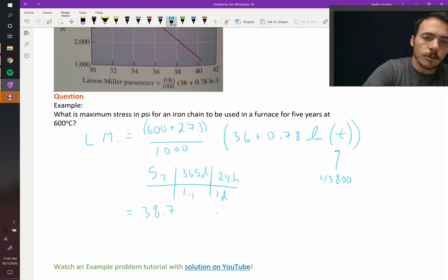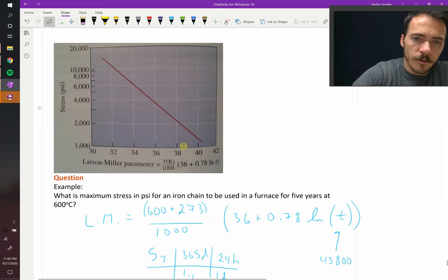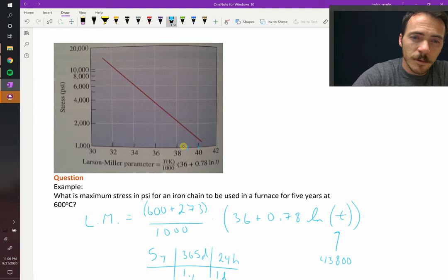38.7. So now let's look at this plot. And 38.7 is where? Well, that's 38, that's 39, and that's 40. So 38.7 is going to be maybe around there. We come up to there.